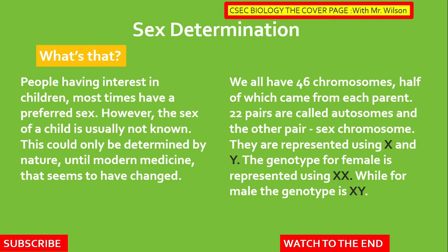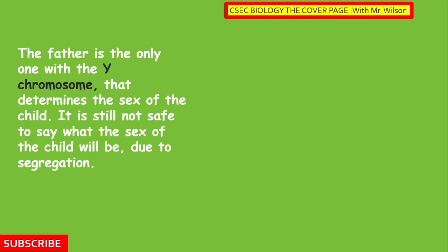We all have 46 chromosomes, half of which came from each parent. 22 pairs are called autosomes and the other pair, sex chromosomes. They are represented using X and Y. The genotype for female is represented using XX, while for male the genotype is XY. The father is the only one with the Y chromosome, and that determines the sex of a child.